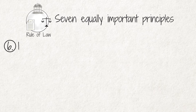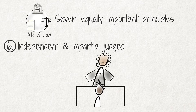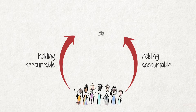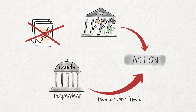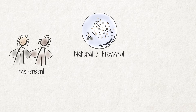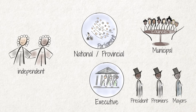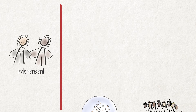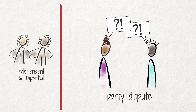Principle 6 is that when we disagree about the law with each other or with the government, we must have access to independent and impartial judges. This also helps to hold those with power accountable. If they act without being authorized to do so by law, our independent courts may declare their actions invalid. An independent judge means that the legislatures — meaning parliament, provincial legislatures or municipal councils — and the executive, for example the president or premier or a mayor, may not tell a judge what to decide. An impartial judge is not beholden or connected to any of the parties in the dispute.